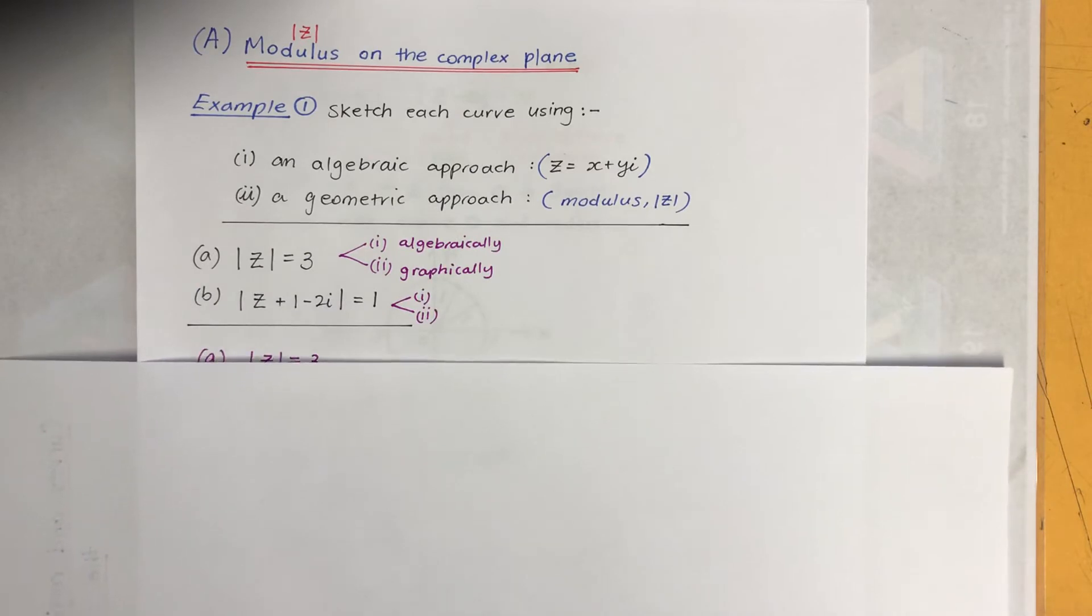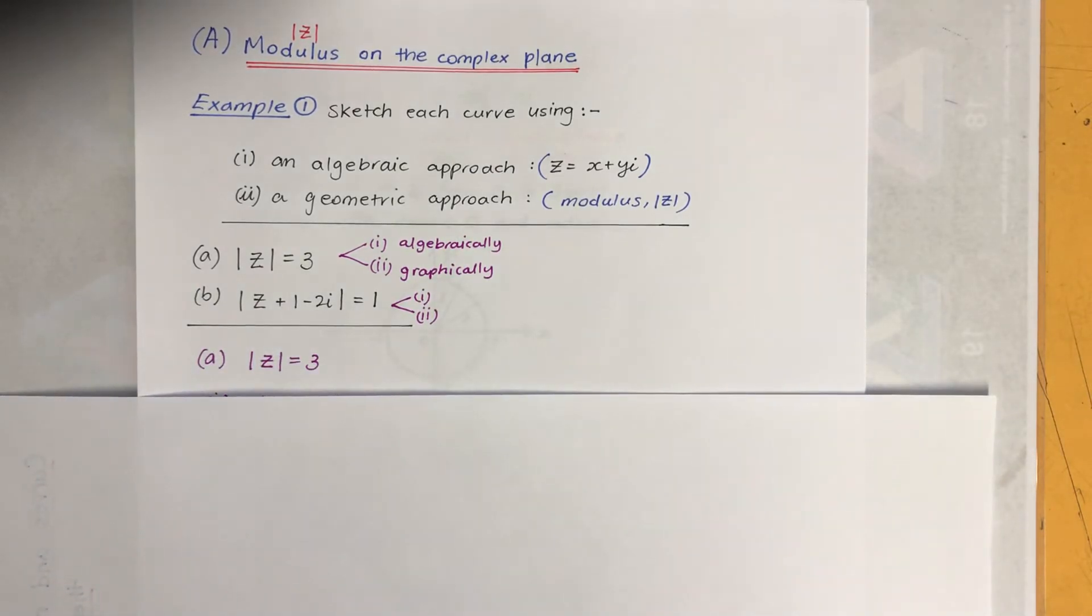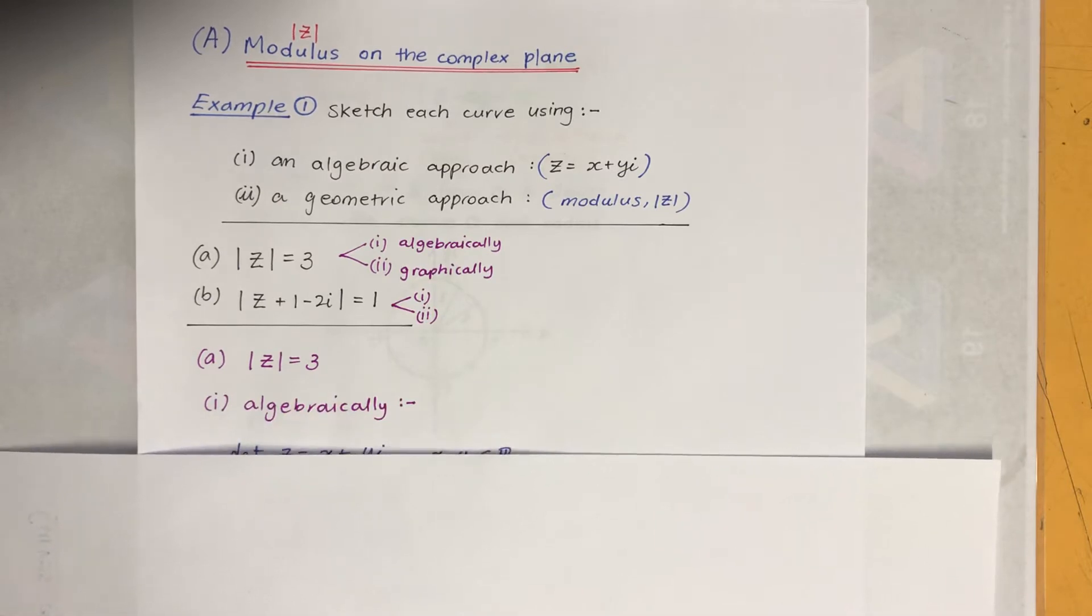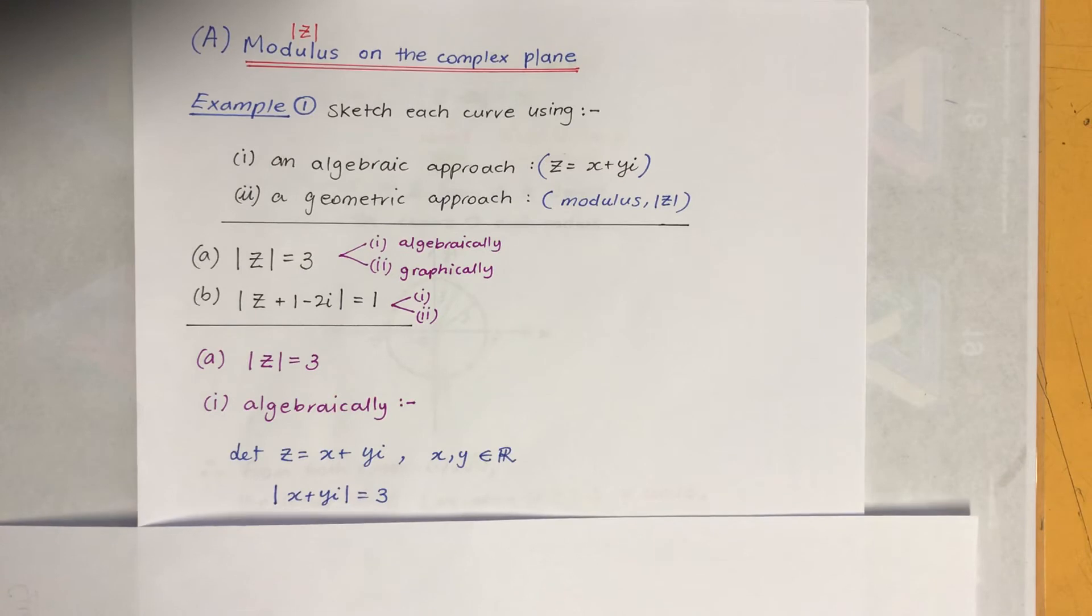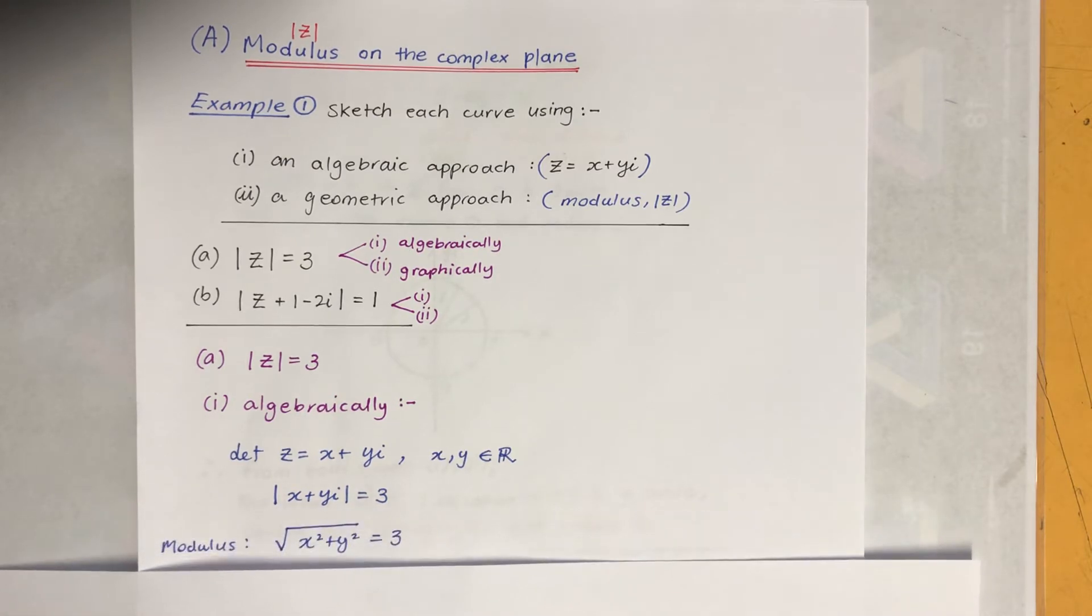So there are the two questions we've got to do. The first one is absolute value of Z equals 3. So as soon as you see this, you'll have to think about modulus. So algebraically we're going to let Z equals X plus YI, and obviously X and Y have to be real. And then I'm going to replace Z with X plus YI, and we need absolute value of that, which is modulus.